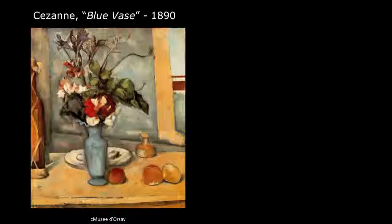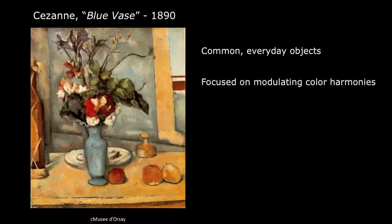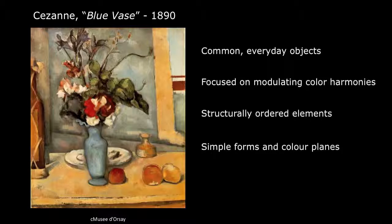The next painting we're looking at is by Cézanne, called The Blue Vase from 1890, which belongs to the post-impressionist period. Cézanne used common everyday objects because he wanted to focus his attention on modulating color and shape harmonies between objects and the space surrounding them. He structurally ordered whatever he perceived into simple flat planes. The background space in this painting is constructed by a clever interplay of vertical and horizontal lines, which contain evenly distributed volumes.